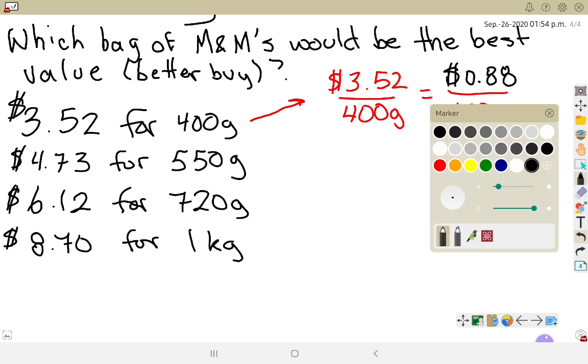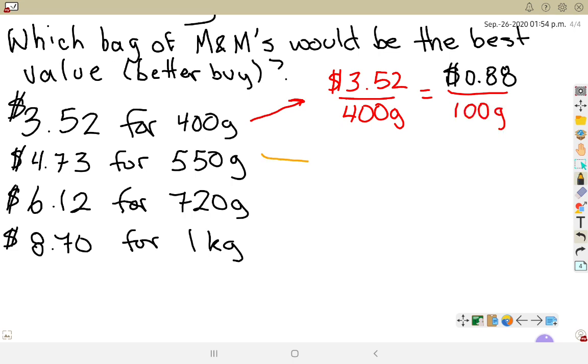Let's look at the next one. Setting up my rate, it's $4.73 for 550 grams. How much is it going to be for 100 grams? Again, for solving this, go back to the previous video on solving proportions. We've got $4.73 times 100, because they're across from one another, divided by 550, and that gives us $0.86 per 100 grams.